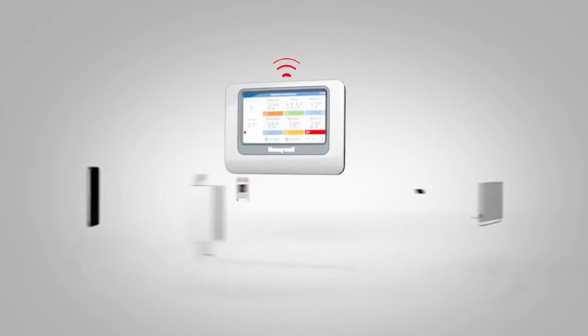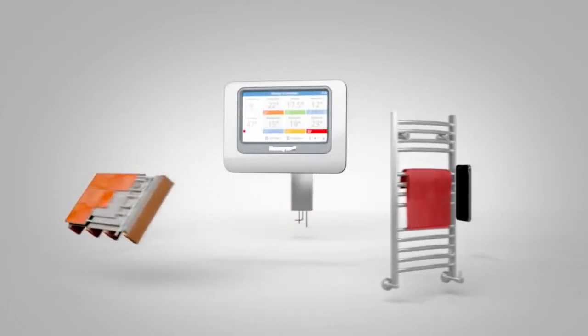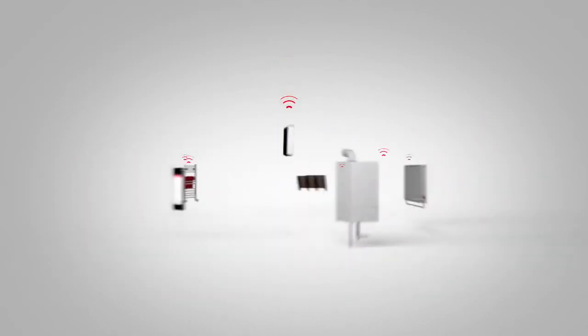EVO Home is designed to suit the majority of homes. Working wirelessly, it can be fitted quickly to your home, taking the hassle and complexity out of any installation.